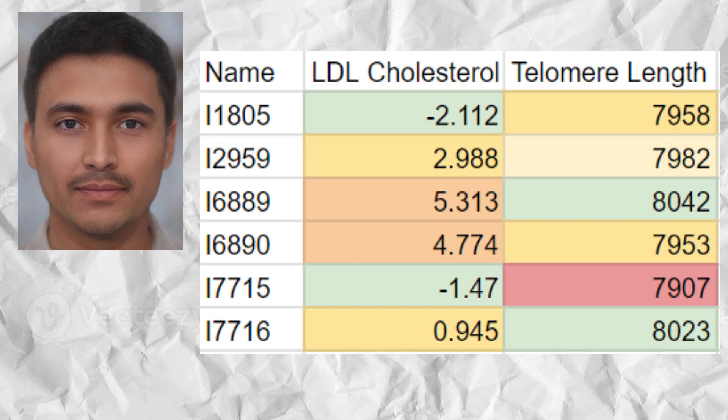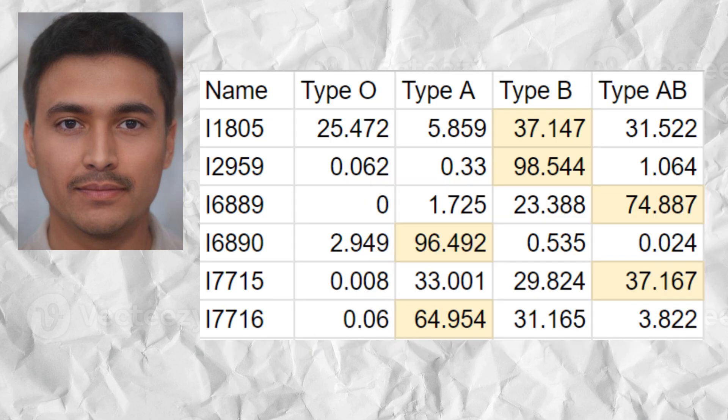The samples had a predisposition to elevated LDL cholesterol levels and shorter telomere lengths, which leads to a shorter biological lifespan. The most common blood groups among the six samples were A, B, and AB, and no sample scored blood group O — which is very surprising, as blood group O is the most common blood group in virtually all other human groups on Earth.